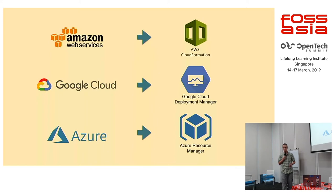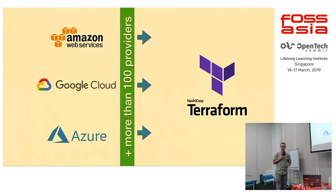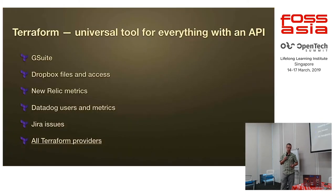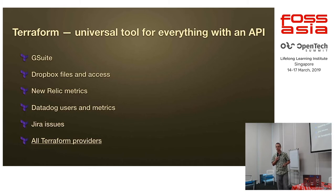You may think: why Terraform? Why not AWS CloudFormation? Or if you're on Google, why not Google Cloud Deployment Manager? Or Azure Resource Manager? The answer is that Terraform has more than 100 other providers in addition to these, which means it's possible to manage very large amounts of different types of resources — it can be your G Suite access, Dropbox files, New Relic metrics, Datadog permissions, different dashboards, and whatever else you can figure out. There are enormous amounts of providers created by the community.